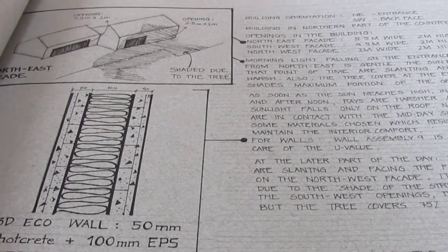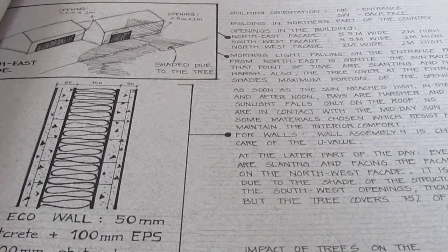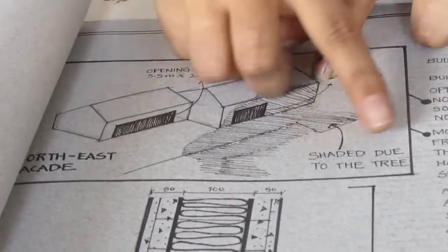I went façade to façade analyzing my design. On reading the northeast façade, I saw how the tree that was existing there was shading my opening.